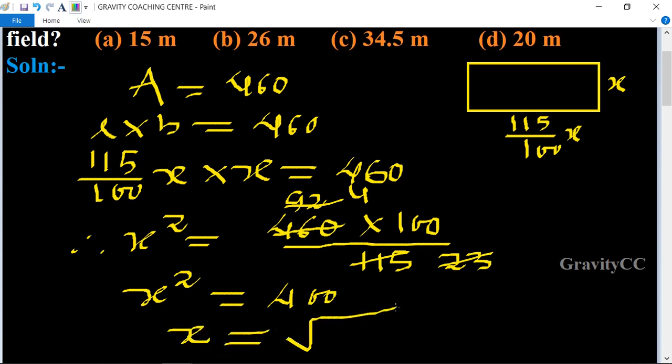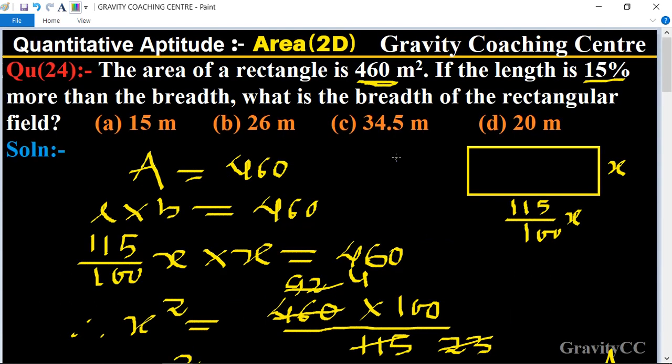under 400 and its root is 20, so 20 meter is the required answer, so option D is the correct answer.